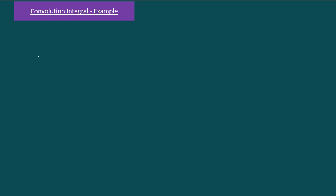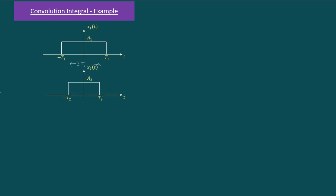Hello friends. In this video we will discuss the evaluation of convolution integral with an example. This is a very important example where we consider the convolution of two rectangular signals: one of width 2t1 and another of width 2t2. The assumption here is that t1 is less than t2, and we are interested in evaluating the convolution of these two signals.